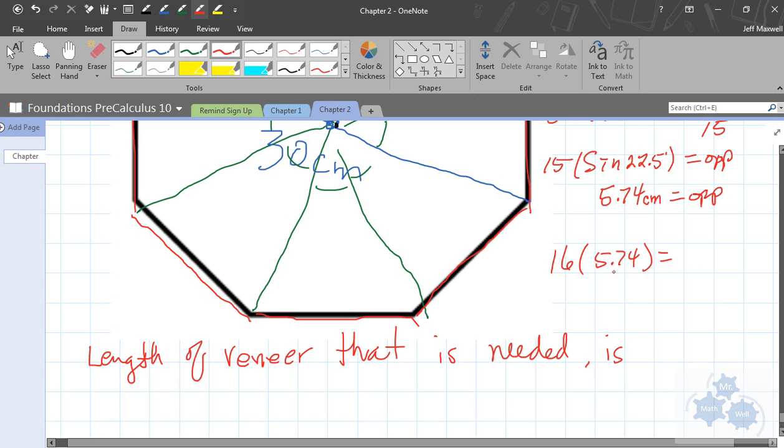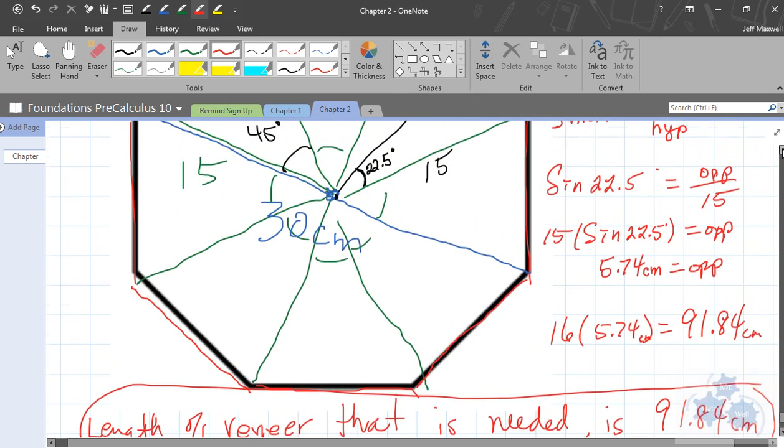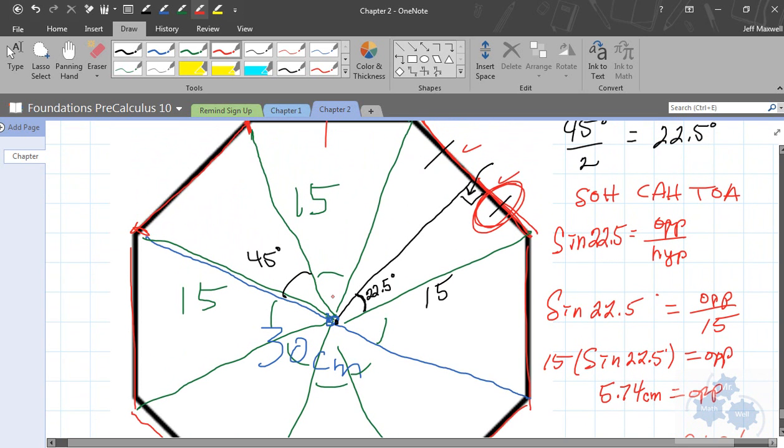All right, that's 16 times 5.74 centimeters is 91.84. So, notice I've got a word sentence to conclude. I've got a diagram. I've got all my work. And I've shown fairly well here my thinking.